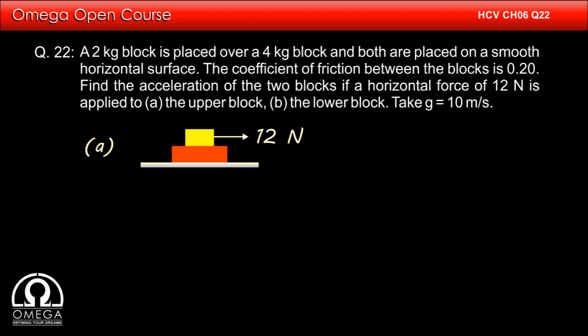Then we look at the block on which the direct force is not being applied. This block will move only because of friction. We know the maximum value of friction is mu times normal, so we can calculate the maximum acceleration with which this block can move. If the common acceleration we calculated is less than or equal to this maximum value, then both blocks will move together; else they will move independently.